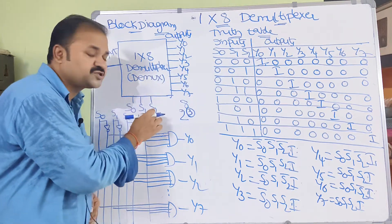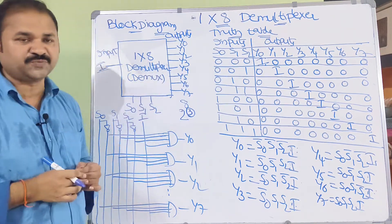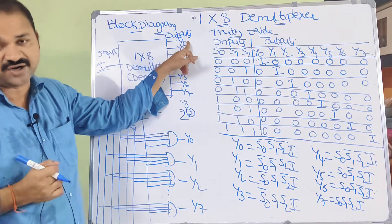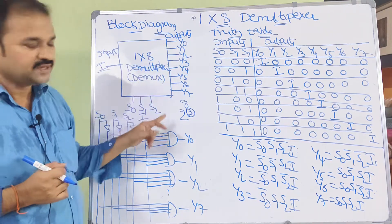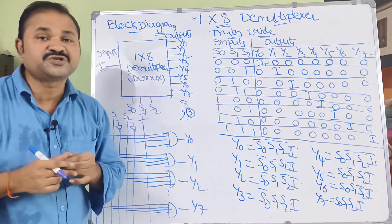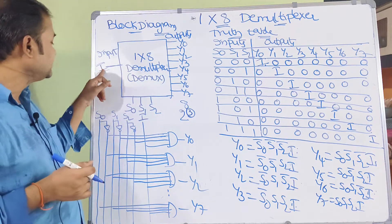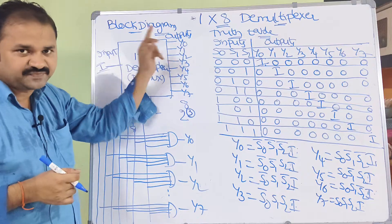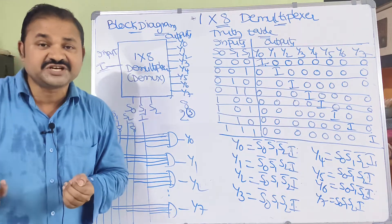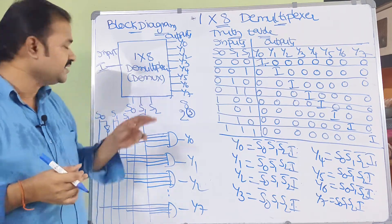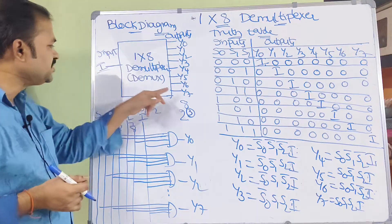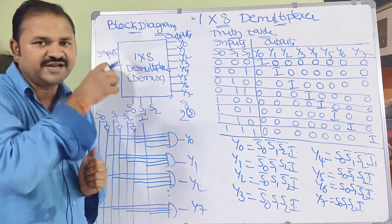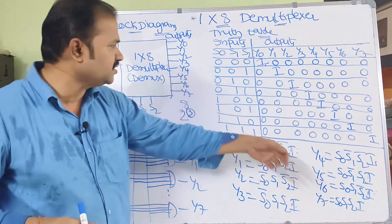If the selection inputs are 0-0-0, then the input will be connected to Y0. If the selection inputs are 0-0-1, then the input will be connected to Y1. Likewise, if the selection inputs are 1-1-1, then the input will be connected to output Y7. You will get perfect clarity from the truth table.